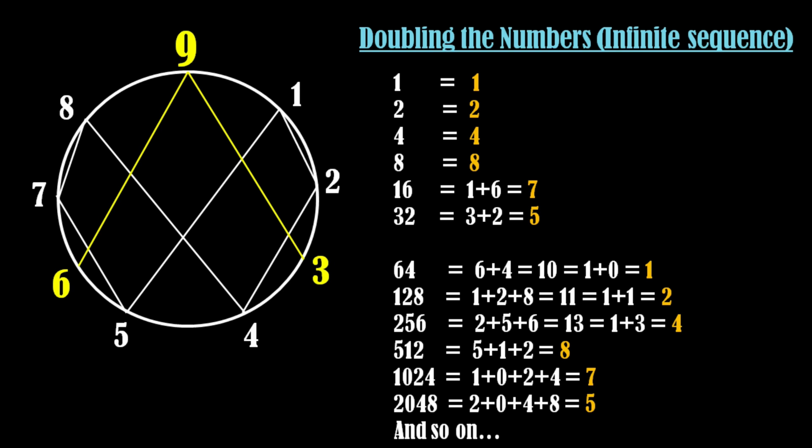So here you can see the digital roots of these numbers. Can you observe a pattern in the digital roots that are shown here in orange color? You can see a repeated sequence of numbers 1, 2, 4, 8, 7 and 5. Even if you go up to infinity, the same pattern repeats.